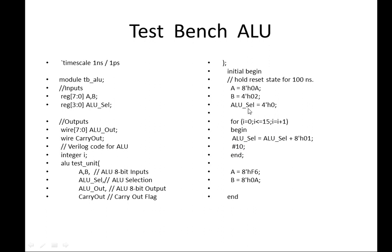Then a second set of test vectors is applied: A is set to 8'hAF and B is set to 8'h08, and the same loop of 16 operations is performed again using these new values.